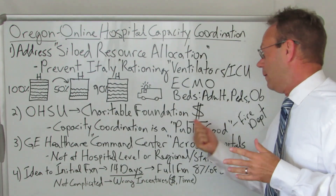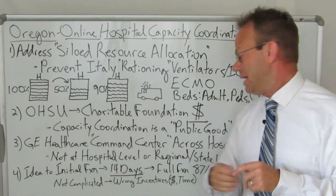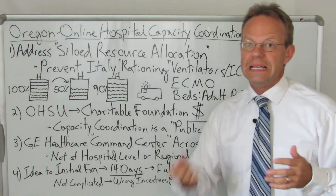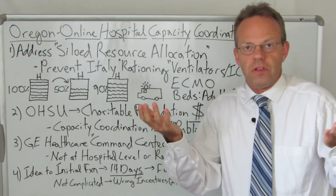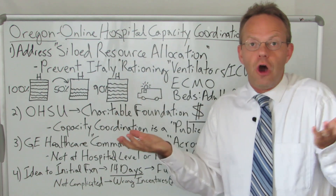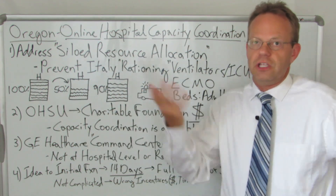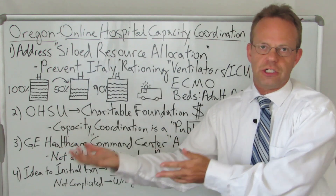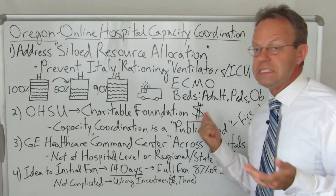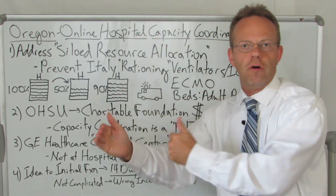This brings up the point that capacity coordination is a public health good. The free market within healthcare did not create this — it didn't exist anywhere in America until a few weeks ago, and now it exists in only one state. This is a failure of the free market, because coordinating bed capacity across hospitals is a public good, like the fire department. You don't need to coordinate this all the time — it's kind of rare — and you never know who's going to benefit from it. That means it's a public good.